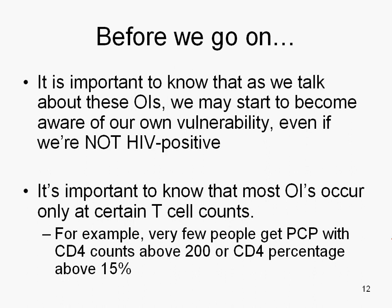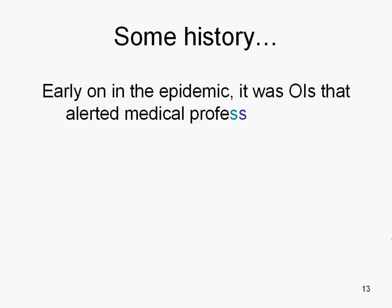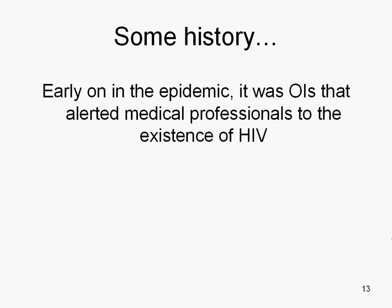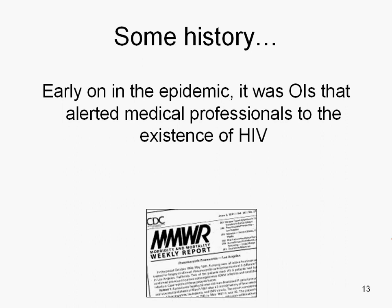If you find yourself in that category, you can take heart, because one of the things that is true about opportunistic infections now that didn't used to be is that they're treatable. We have things that can kick their butt. Early on in the epidemic, it was actually the appearance of OIs that alerted medical professionals to the existence of HIV. That's a picture of the first morbidity and mortality weekly report that listed incidents of PCP pneumonia in young and otherwise healthy men.